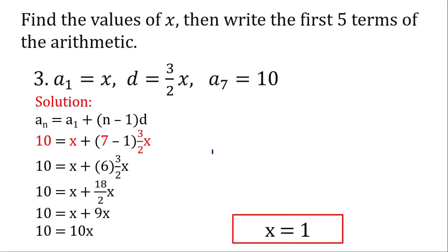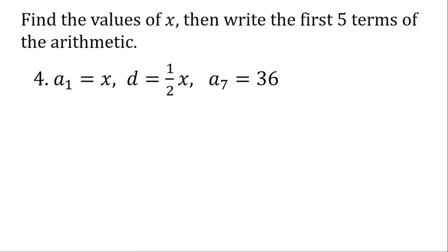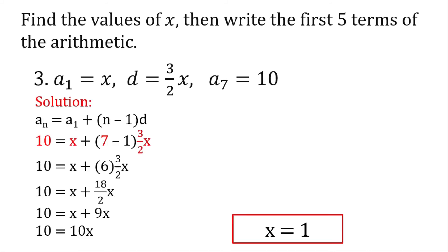So that's the value of our x. Let's first substitute all the values here. So 1, and that would be our first term. Now, 3 over 2 times 1 is 3 over 2. Now, for the sake of simplifying the problem, let's just make this as decimal. So 3 divided by 2 is 1.5.